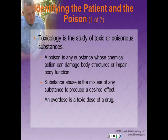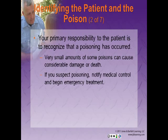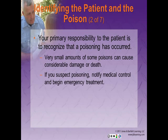Toxicology is the study of toxic or poisonous substances. A poison is any substance whose chemical action can damage body structures or impair body function. Poisons act by changing the normal metabolism of cells or by actually destroying them. Substance abuse is the misuse of any substance to produce a desired effect. A common complication is overdose, which occurs when a patient takes a toxic dose of a drug. Your primary responsibility as an EMT is to recognize that a poisoning has occurred and start emergency treatment immediately.